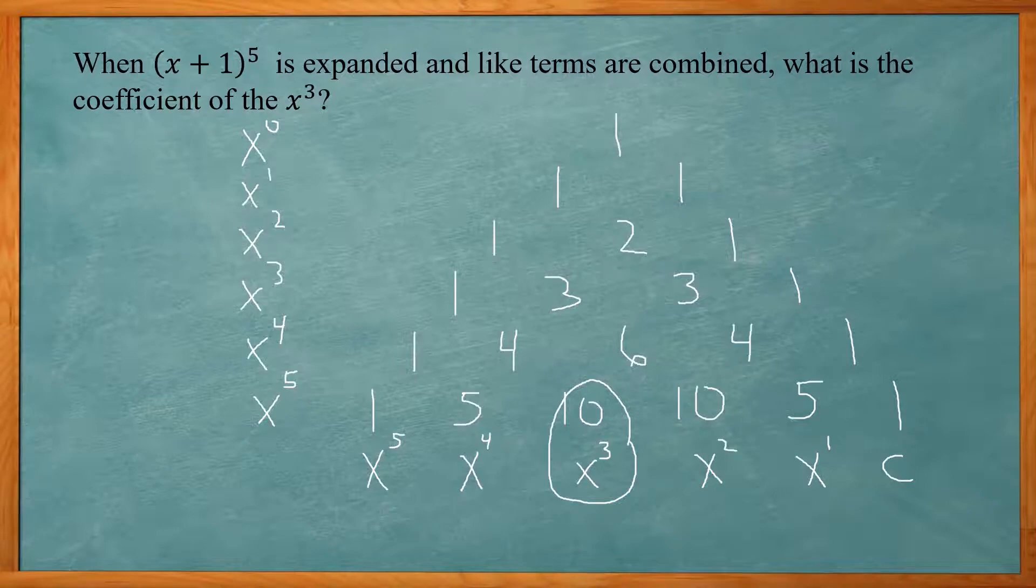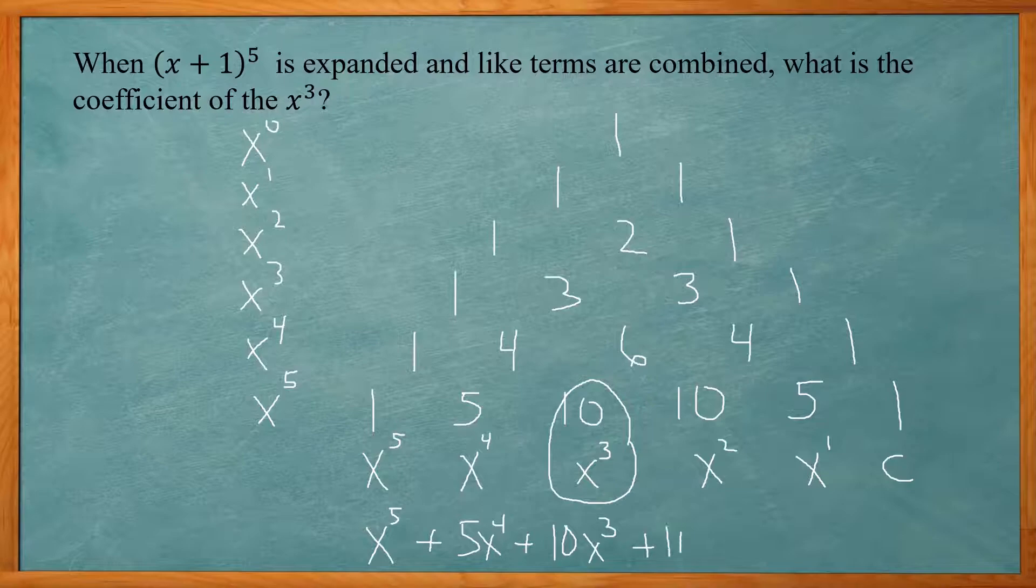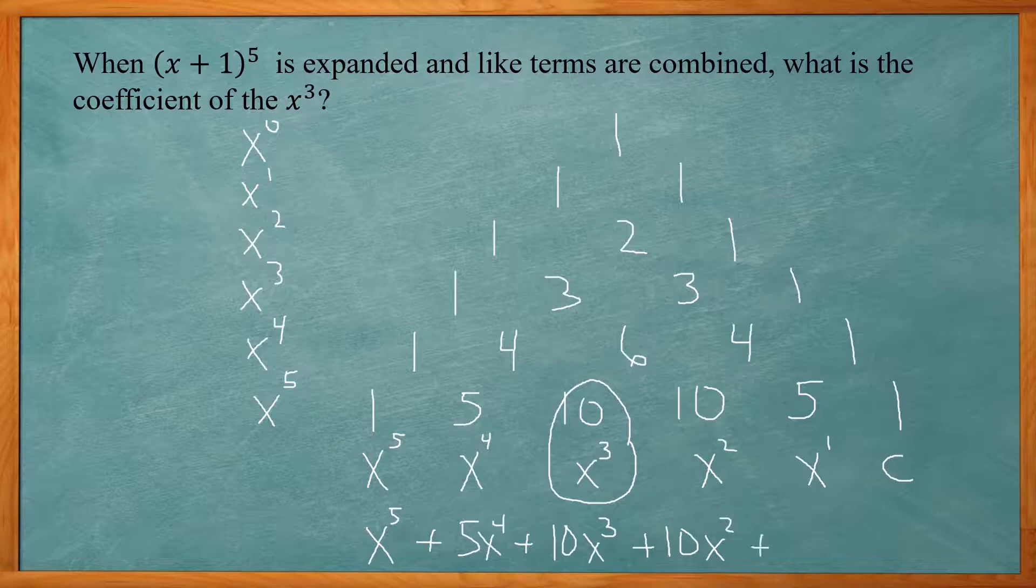So if I write this out, it'll be x to the 5th plus 5x to the 4th, plus 10 x to the 3rd, plus 10 x to the 2nd, plus 5x plus 1.